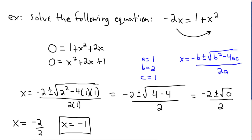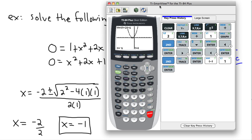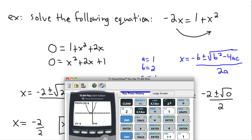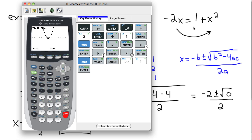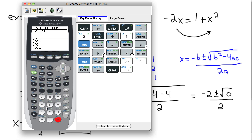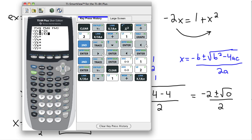What if you were extra lazy and didn't want to do any of that? You could start with the original equation and just graph both sides. Rather than rearranging into a quadratic set equal to zero, you could just graph y = −2x and y = 1 + x² separately. When I graph both, they look totally different, but the key question is: where does this straight line graph meet the curvy graph? That intersection is what we're looking for.